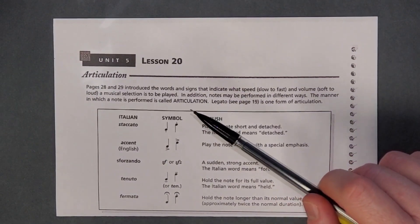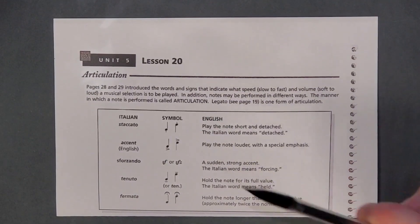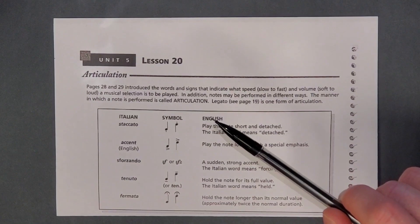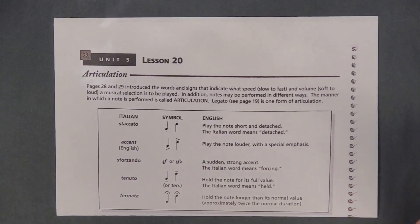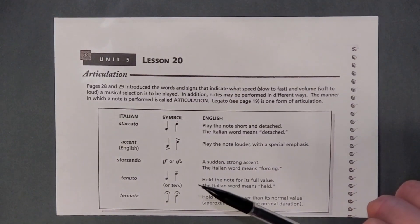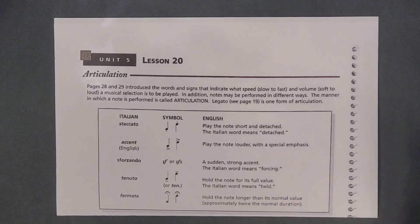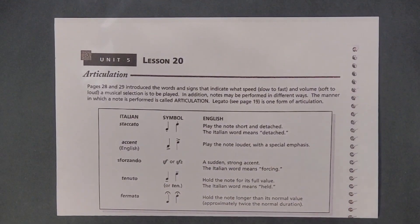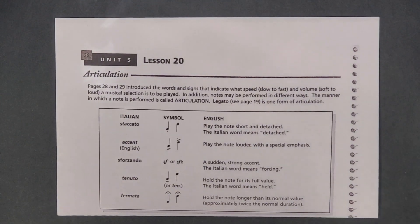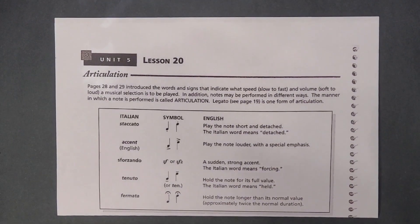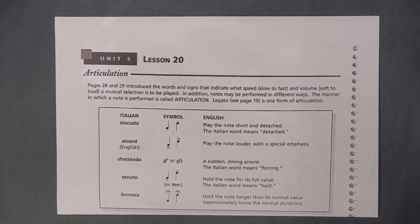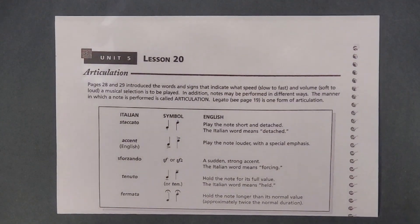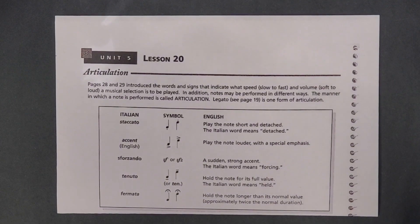Hey, Anthony here with another lesson from the Alfred's Essentials of Music Theory series. In this video, I'll cover Unit 5, Lesson 20. Don't forget to subscribe so you never miss a new video. There is an index with links in the description so you can easily find the lessons you need. I highly recommend that you own a copy of this book and are only watching this video to check your work, review, or because you got really stuck on something. Okay, let's get right into it.